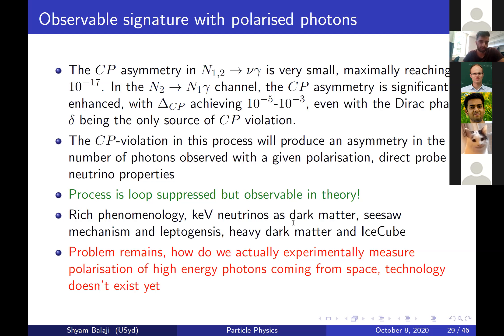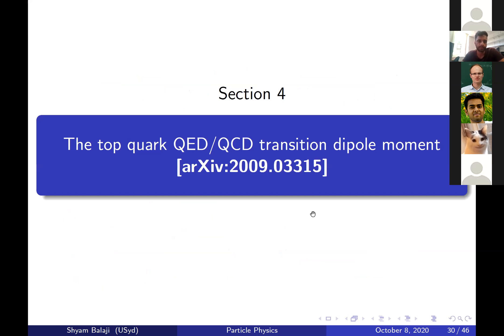There is an experimental challenge: measuring the polarization of high-energy photons from space is very difficult. For example, a 10 TeV neutrino decaying and producing photons above TeV scale makes polarization measurements extremely hard — feasible in controlled lab conditions, but very challenging for photons coming from space.